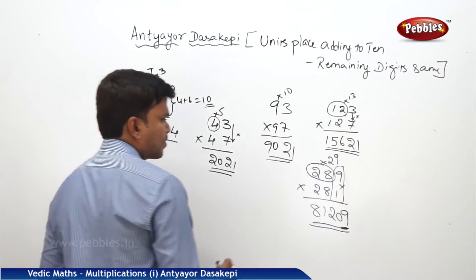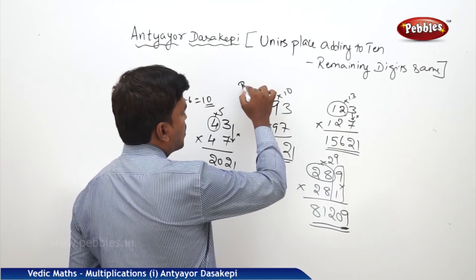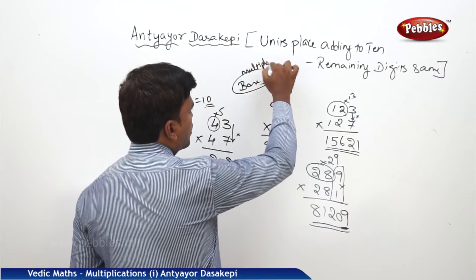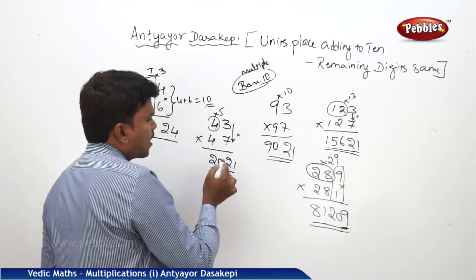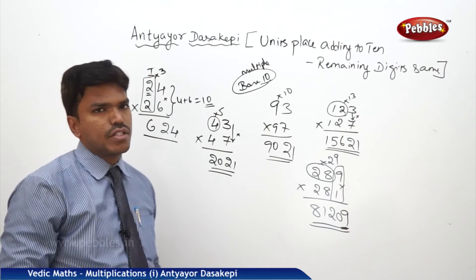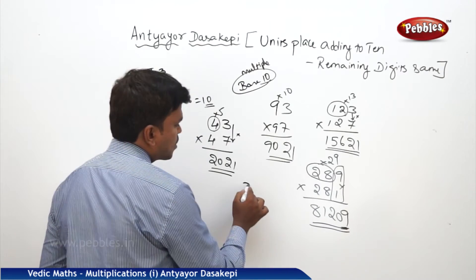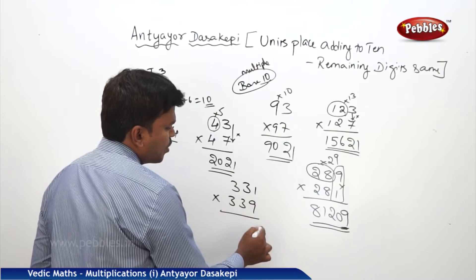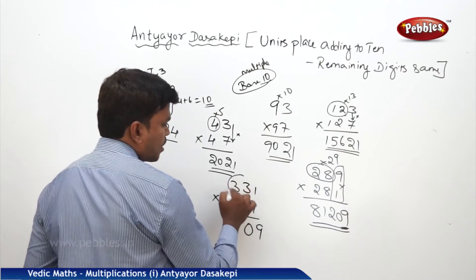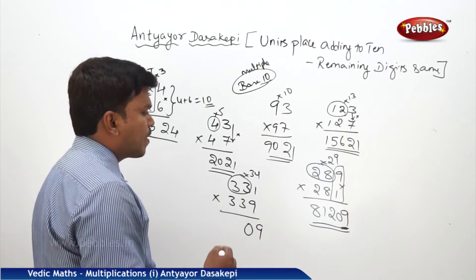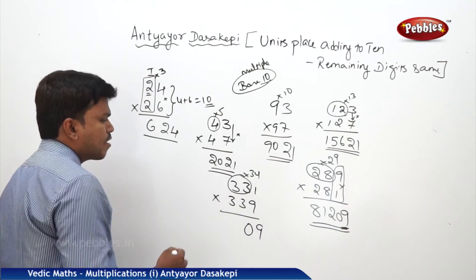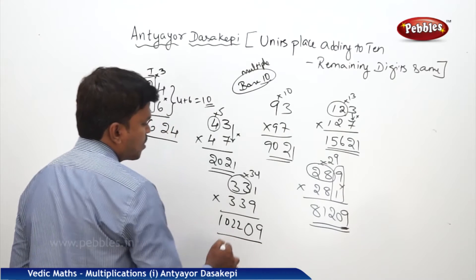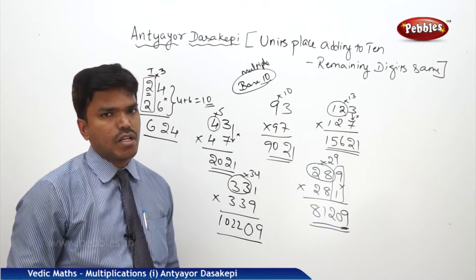One more example: 331 into 339. Here we are taking the base as a multiple of 10. So 1 into 9 is 9, but it is written as 09. Then 33 into 34: if you know 33 squared is 1089, just add one more 33 to that. 1089 plus 33 is 1122. So the answer is 112209.